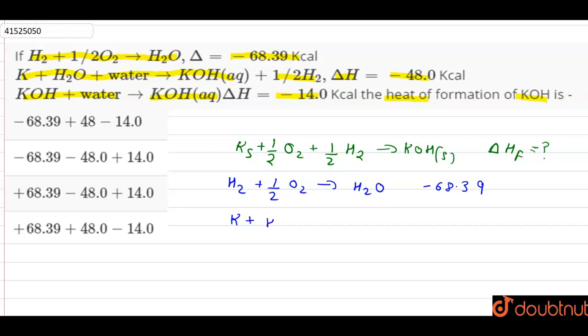And the second equation? K plus H2O plus water gives us KOH aqueous plus half H2. Its delta H is minus 48.